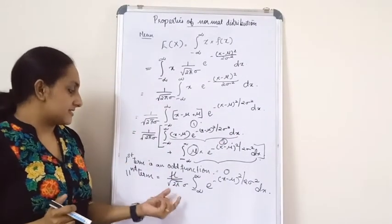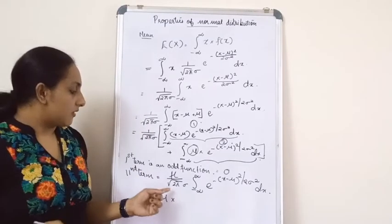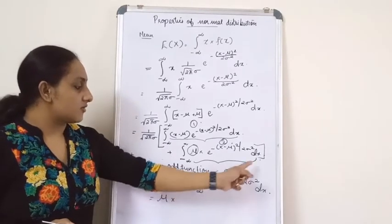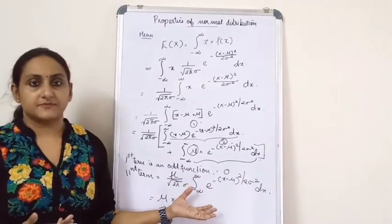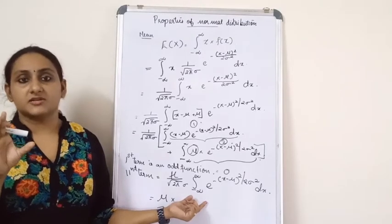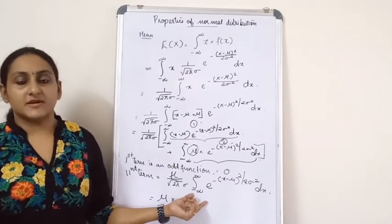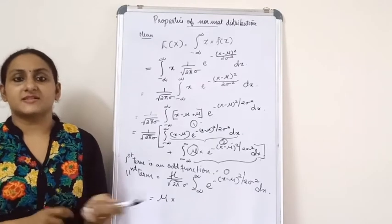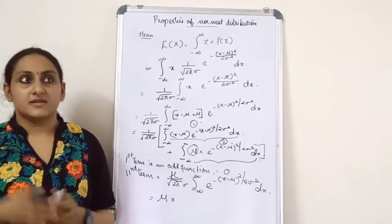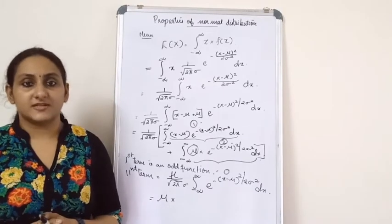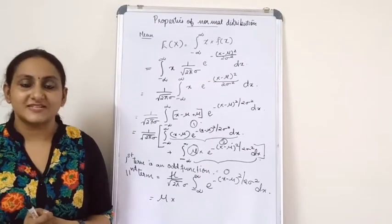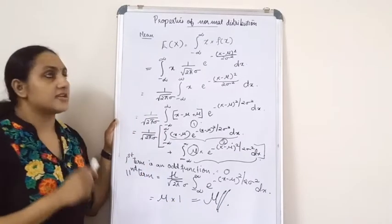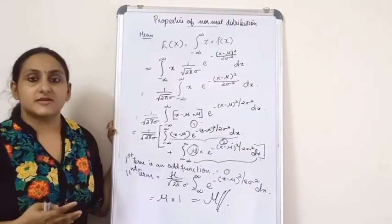What is this? You have mu here multiplied by 1 by root 2 pi sigma integral minus infinity to plus infinity e raised to minus x minus mu the whole square divided by 2 sigma square dx. This is nothing but the density function of a normal distribution. Whenever you integrate a density function over its full range, the result is 1. So that is multiplied by 1, which gives the final answer as mu. Hence, the expectation of x, or the mean of a normal distribution, is mu.